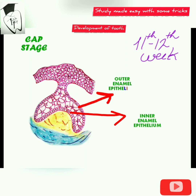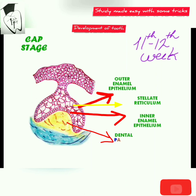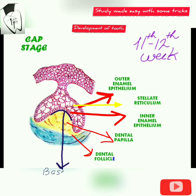These are the stellate reticulum cells, this is the dental papilla, and there is the dental sac. The enamel organ is divided from the dental papilla and dental sac by the basement membrane.